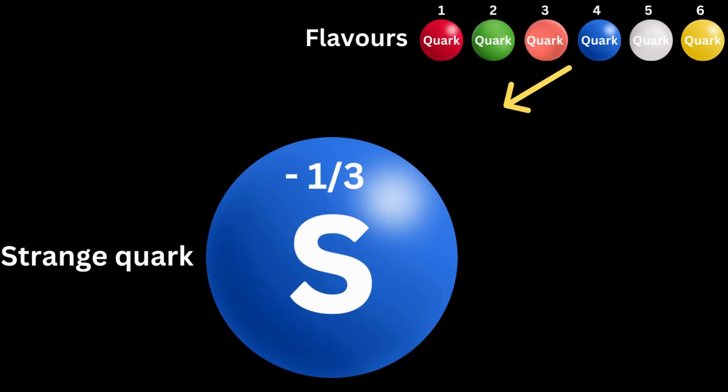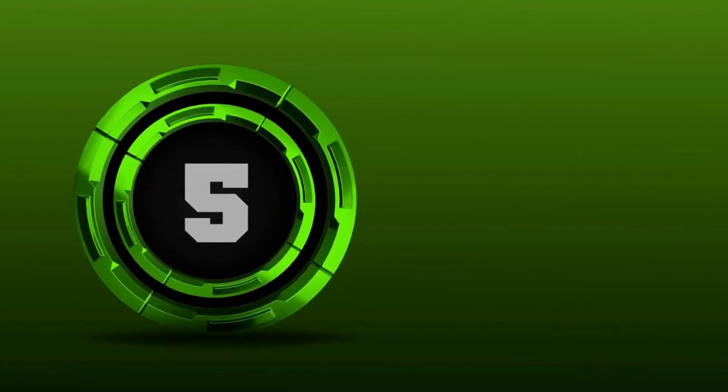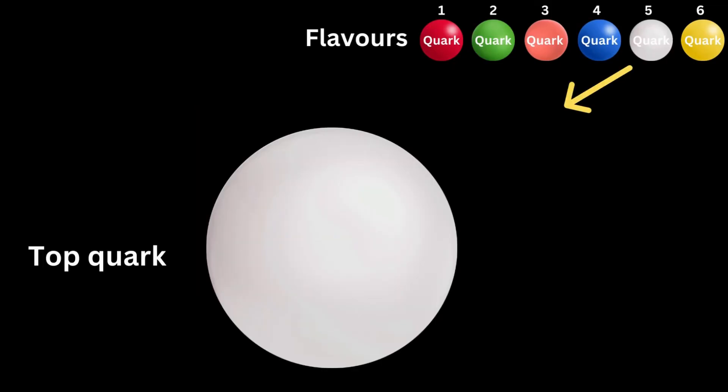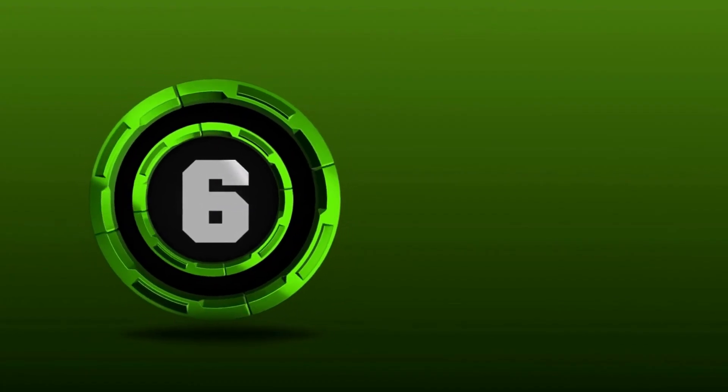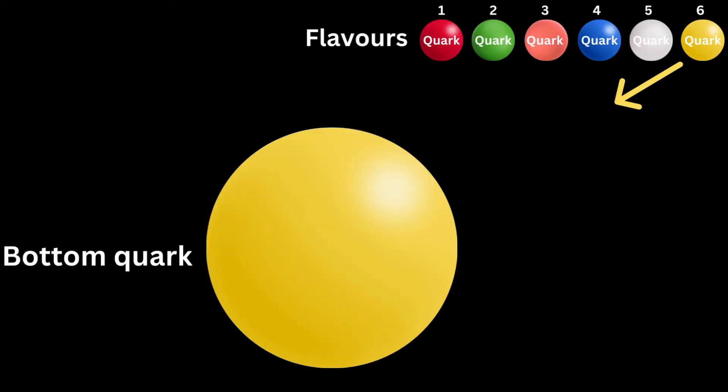Number five: the top quark, t, is the heaviest known quark and has a charge of plus two thirds. And finally, number six: bottom quark, or b, is fairly heavy and has a charge of minus one third.